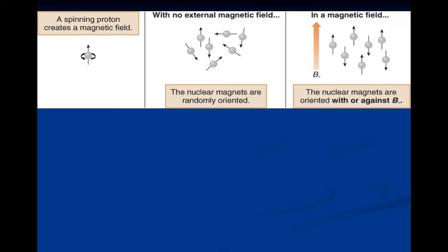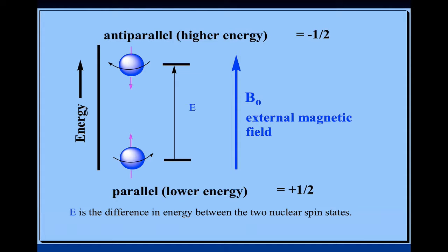The bigger the magnetic field, the bigger the energy gap between these two states. Counting the ups and downs, there are more ups than downs, but not by a lot. NMR is actually an insensitive technique because you'll have a lot aligned with the field and a lot aligned against — a very small difference in the number of spins up versus spins down. Spin up is parallel with the magnetic field; spin down is against it. It's like two bar magnets lined up perfectly for low energy, versus both north poles facing each other — repelling — for high energy. So you have a low energy state, a high energy state, and an energy difference.